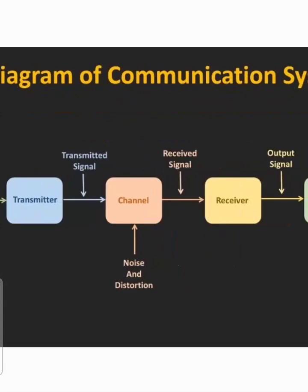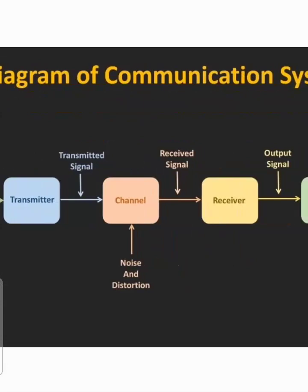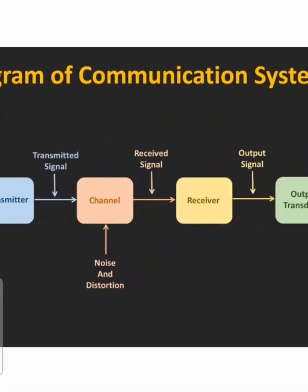We can also transmit our signal through wireless media, that is through the electromagnetic spectrum. For analog communication, we use the RF band — the radio frequency band — for wireless communication. So the channel is divided into wired media and wireless media, and with the help of either, the information signal will reach the receiver.